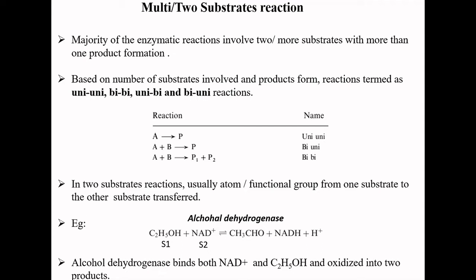Based on the type of substrate involved and the products formed, these reactions can be termed as uni-uni, bi-bi, uni-bi, or bi-uni reactions. For example, when there is one substrate involved in the enzymatic reaction and one product is formed, such a reaction is called a uni-uni reaction.